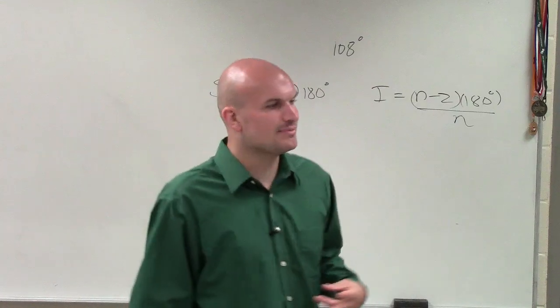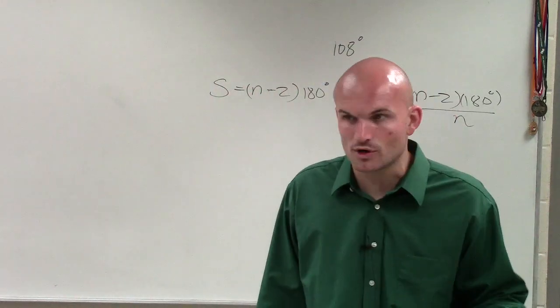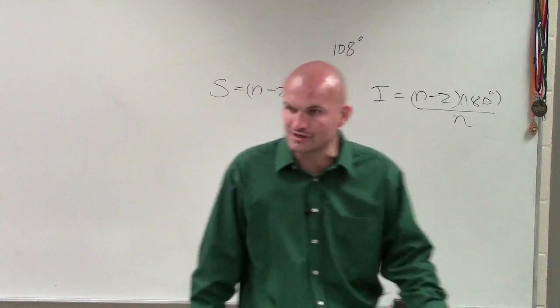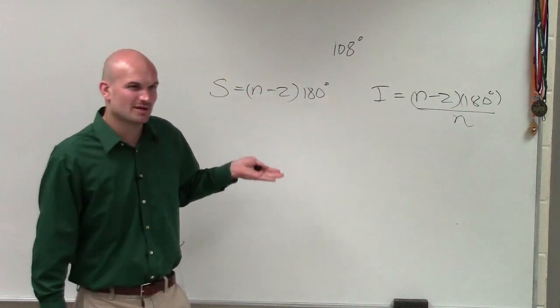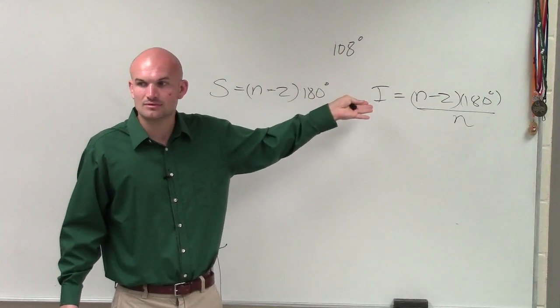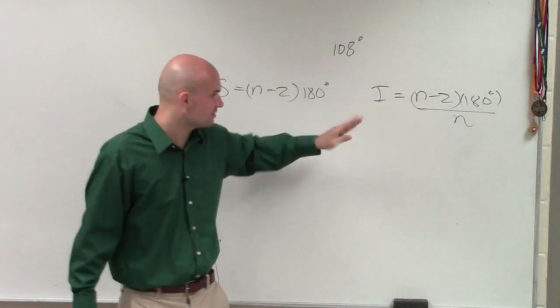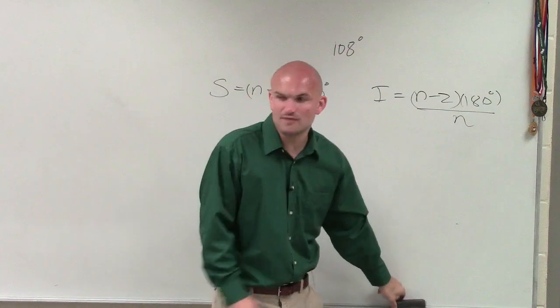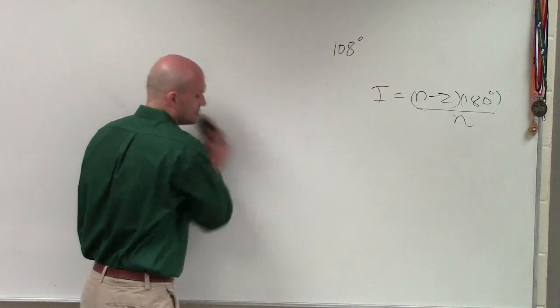So in this problem, they say that one angle is worth 108, or one angle has the measurement of 108 degrees. So which formula do you think I'm going to want to use? The sum of all the angles or the measure of one angle? The measure of one angle. Because they give us the measurement of that one angle. So I'm not going to worry about that.